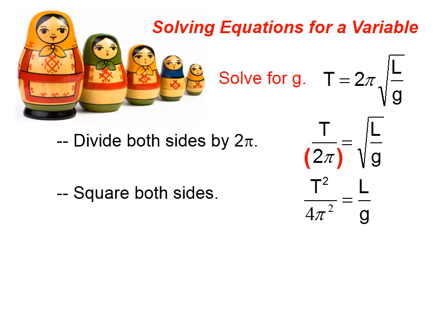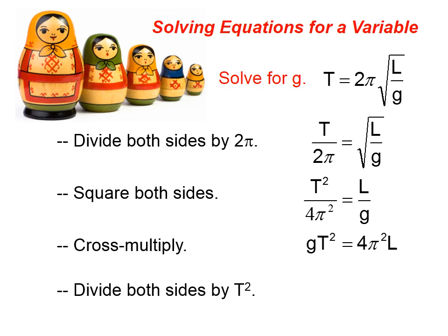And now, what I like to do is cross-multiply. Because when you do that, that gets rid of any denominators. So, g times t squared is equal to 4 pi squared times l. Now, to get g by itself, I simply divide both sides by t squared.